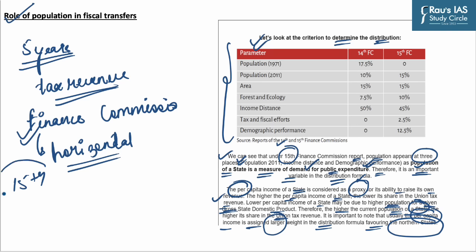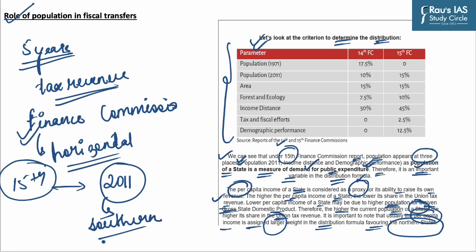The terms of reference of the 15th Finance Commission openly declared taking 2011 population as the distribution formula. With this, the southern states lost the advantage of financial rewards for population control. The southern states have already started facing reduced financial transfers from the Union Government as a reward for controlling population growth. The challenge lies in striking a balance between representation and demographic realities and financial equity, ensuring fairness in political representation and resource allocation, while acknowledging diverse population dynamics across states for effective governance.